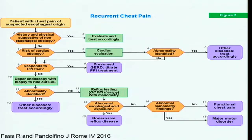Regarding the diagnostic workup for non-cardiac chest pain, this is a proposed algorithm developed with John Pandolfino. Patients with chest pain should first undergo history and physical exam. If a non-esophageal etiology is suggested, that is pursued. If not, cardiac causes must be ruled out — usually by a cardiologist. If cardiac workup is negative, the next step is a trial of PPI therapy. All meta-analyses looking specifically at the PPI test in NCCP have shown that it works and is a highly sensitive test for identifying GERD-related NCCP.